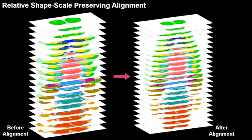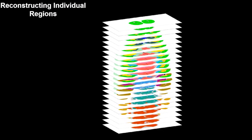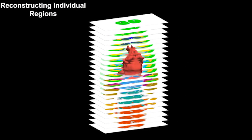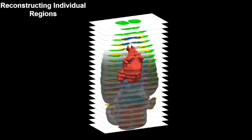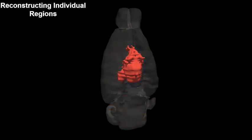We then 3D reconstruct individual regions to ensure geometric and topological correctness. Here in red, we show the reconstruction of the hypothalamus and its spatial location inside the mouse brain.